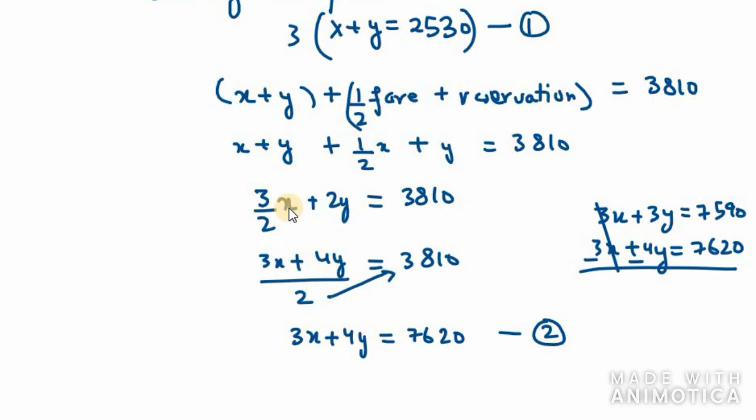We need to subtract the values. 3x and 3x gets cancelled out. We are left with 3y minus 4y, which is minus y. Then we have 7590 minus 7620, which is minus 30. So minus minus gets cancelled out, and y equals 30.